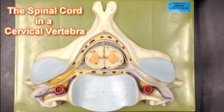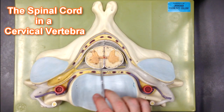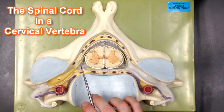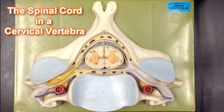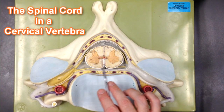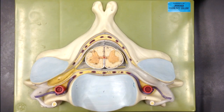Hello, this is Dr. Loach from humanbodyhelp.com, and today I'm looking at a spinal cord model. This is a transection of the spinal cord in a cervical vertebra, so we're looking at what the spinal cord looks like in the cervical spine.